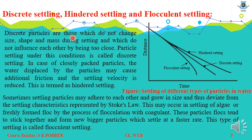Discrete particles are those which do not change in size, shape, and mass during settling. They do not influence each other when two particles come close together — there is no effect between them. Particle settling under this condition is called discrete settling.